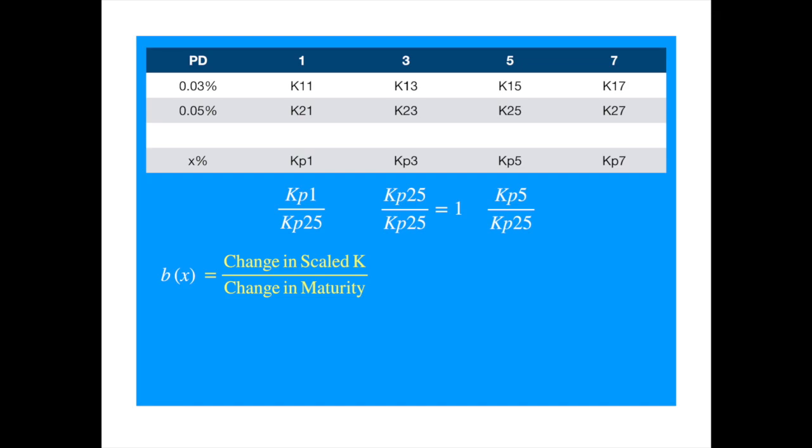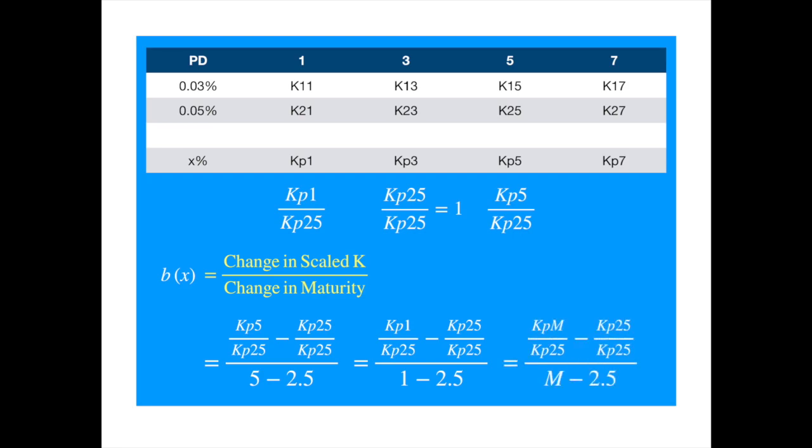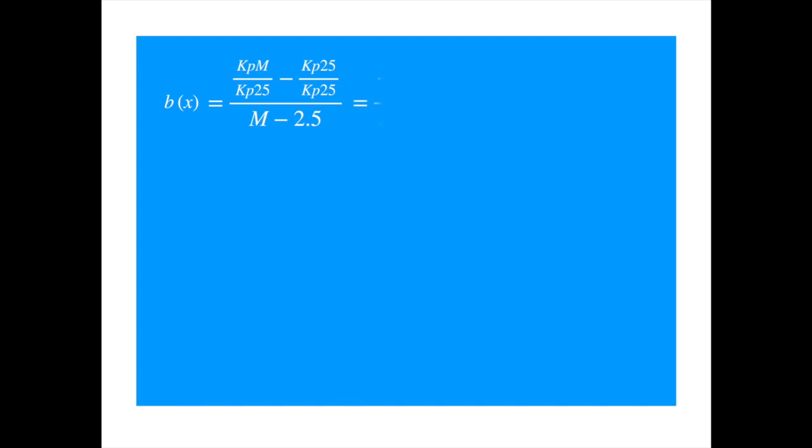Now we know that B is the slope of this ratio with respect to the maturity and we know the slope would be equal to the change in the value of the ratio divided by the change in the maturity. If we use 2.5 as the starting point we can calculate the slope by using higher maturity or lower maturity. The numerical analysis guys call these forward and backward but the choice doesn't matter because we saw that the slope is constant or we can write it in terms of a generic maturity M. Now the second ratio is 1 so we get, shifting the term in the denominator to the other side and rearranging we get.